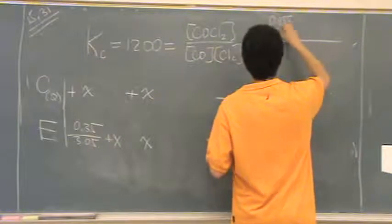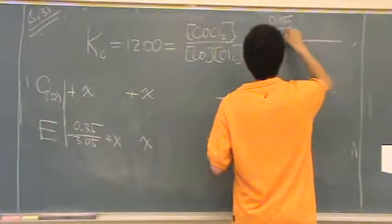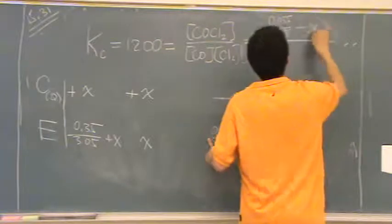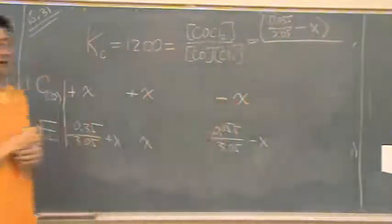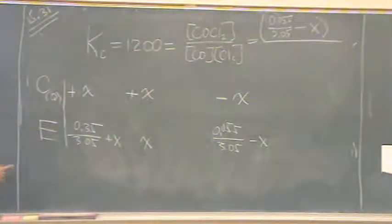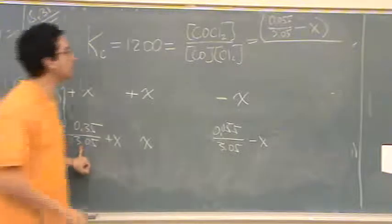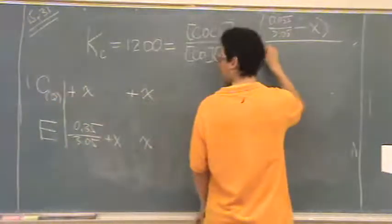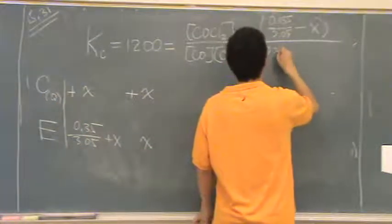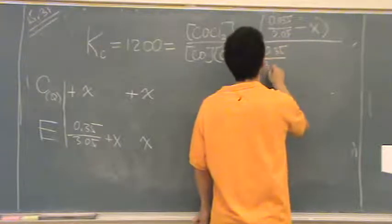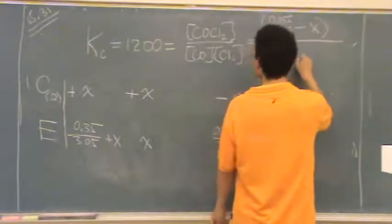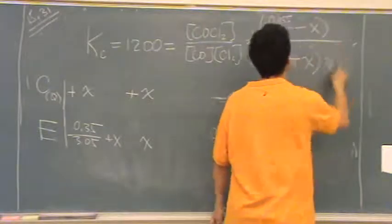You can do the specific math at home. 3.05 minus X. That's the products, divided by the reactants. This value right here, 0.35 divided by 3.05, plus X times X.